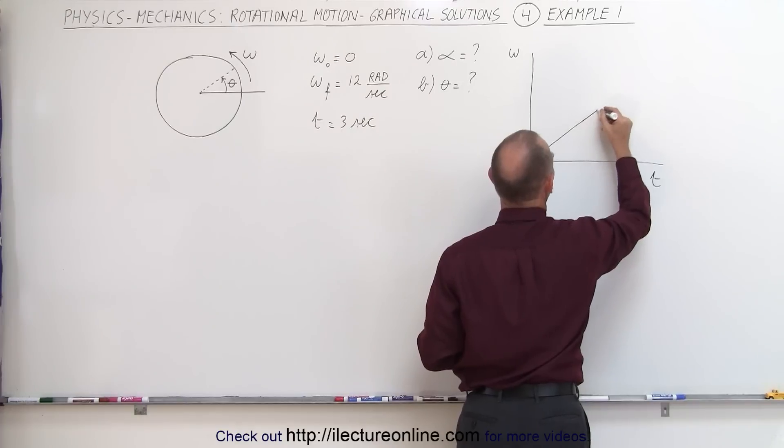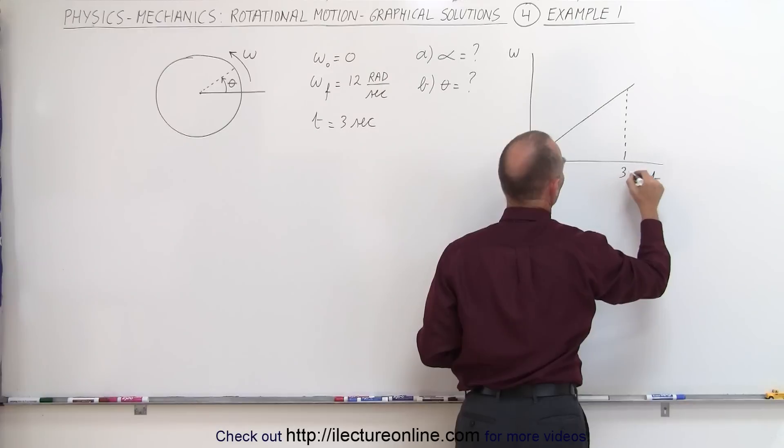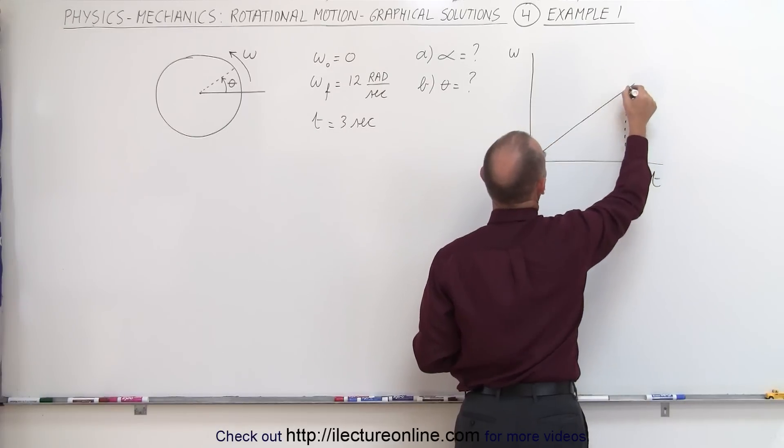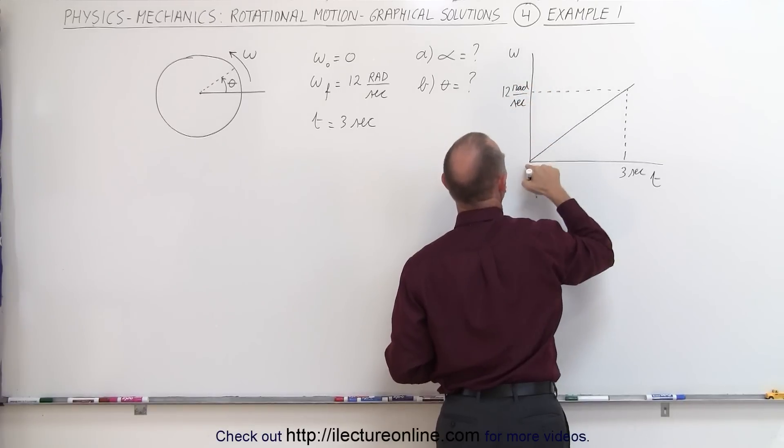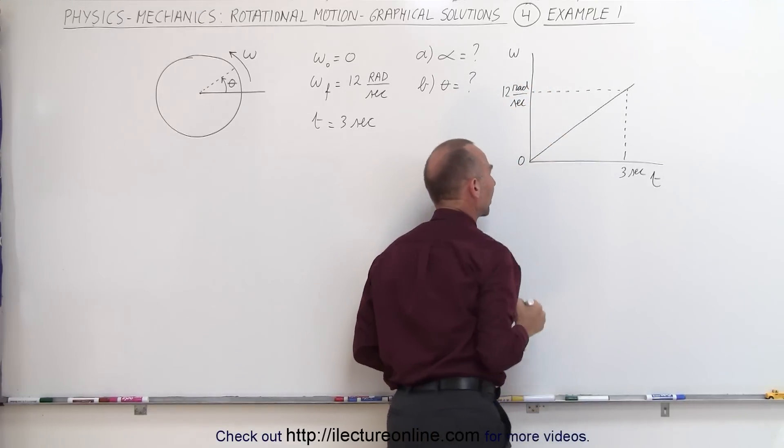Of course I'm trying to make this a straight line. There we go. And let's say that this represents three seconds and after three seconds it has reached an omega of 12 radians per second and notice it starts from zero radians per second.